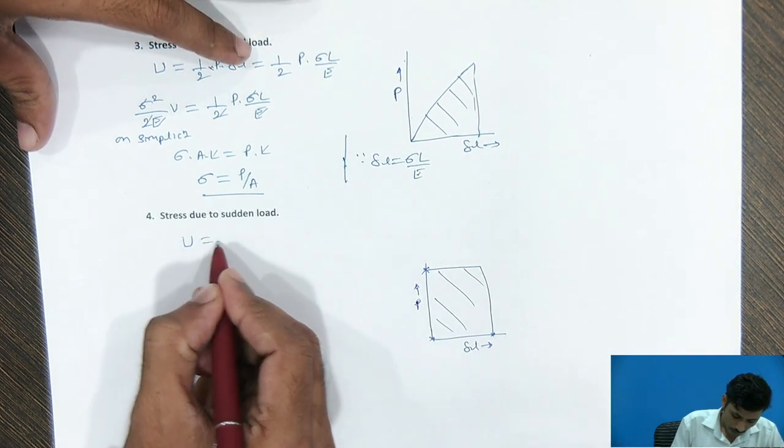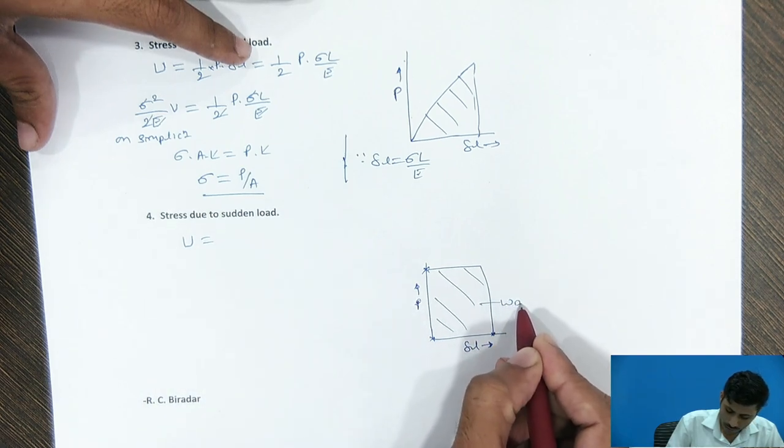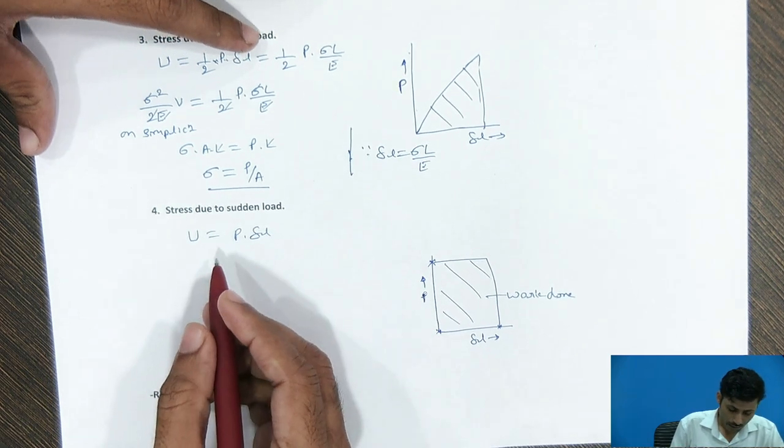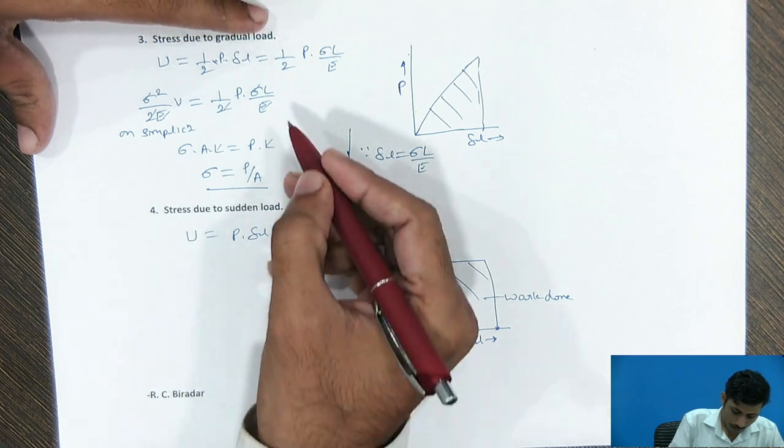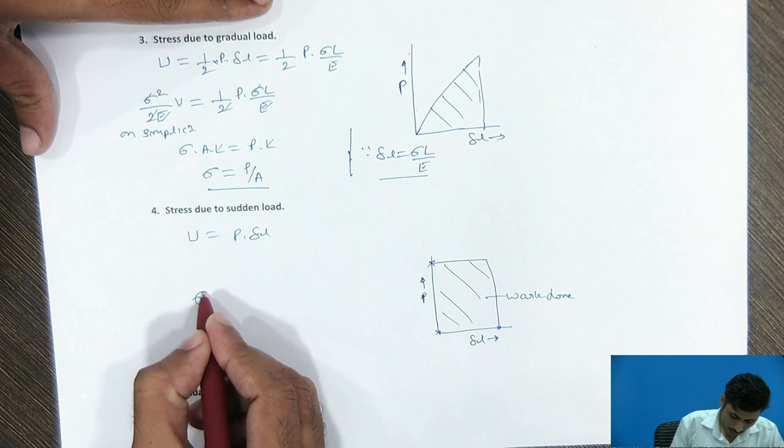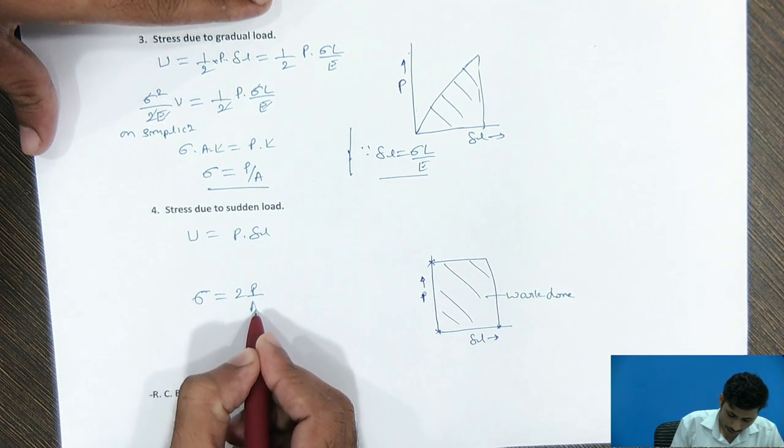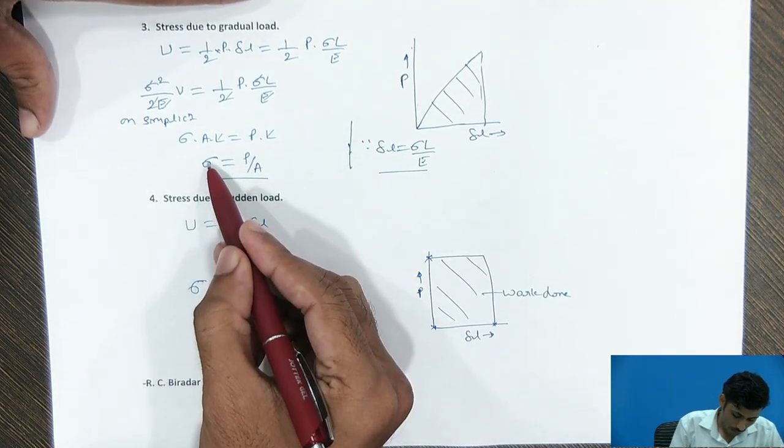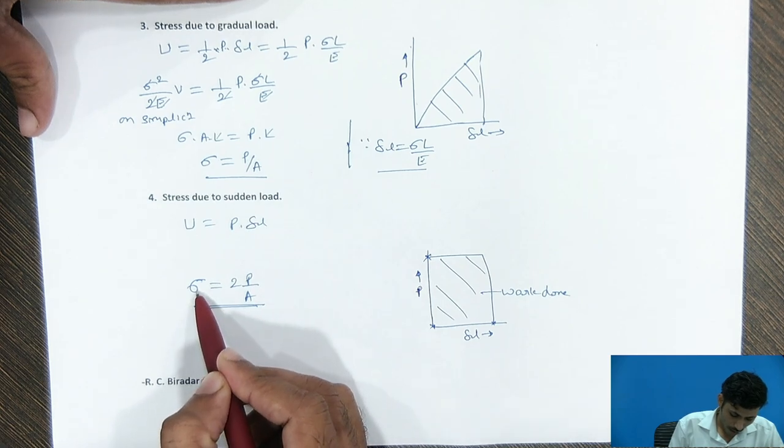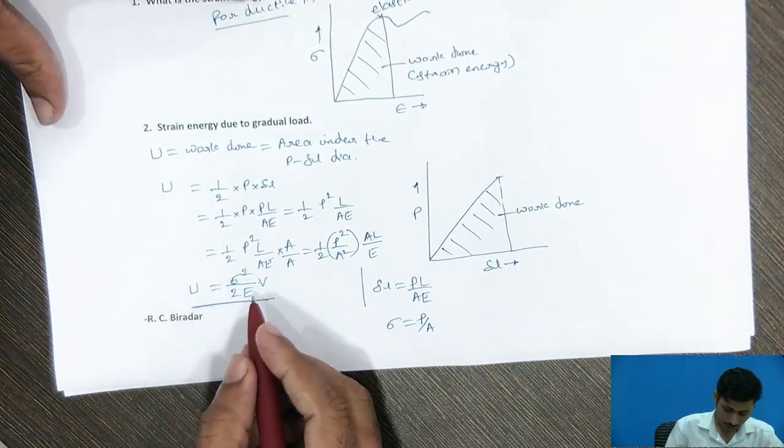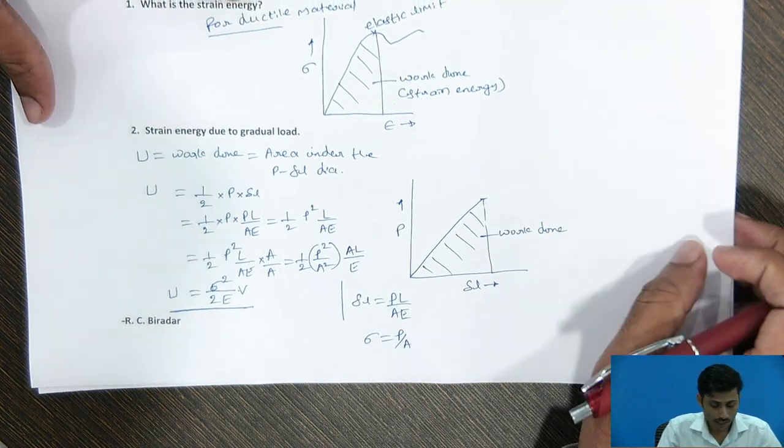Again, same. We can go, the area under this curve is work done. And that is nothing but P into delta L. And if you replace this delta L term as this. We can get sigma value as 2 times P by A. And this value is a sigma for sudden load. And if you use this term of sigma and this term of sigma. Put this value of sigma in this U equation. That is strain energy equation. So, to get the strain energy for gradual load and sudden load.